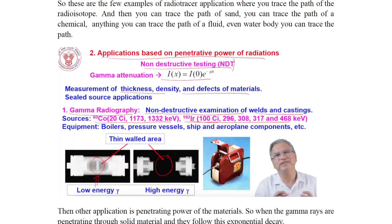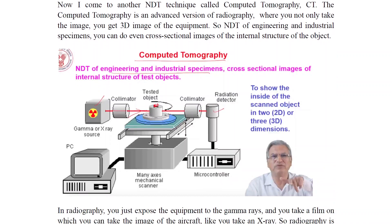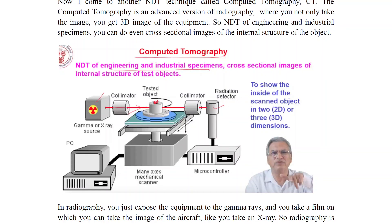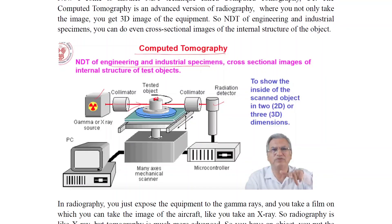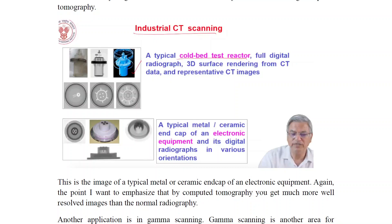Welds and castings use sources like 60Co and 192Ir. Computed tomography (CT) for engineering and industrial specimens produces cross-sectional images showing the internal structure of test objects in 2D and 3D. This includes industrial CT scanning, cold bed test reactors, full digital radiography, 3D surface rendering from CT data, and representative CT images.